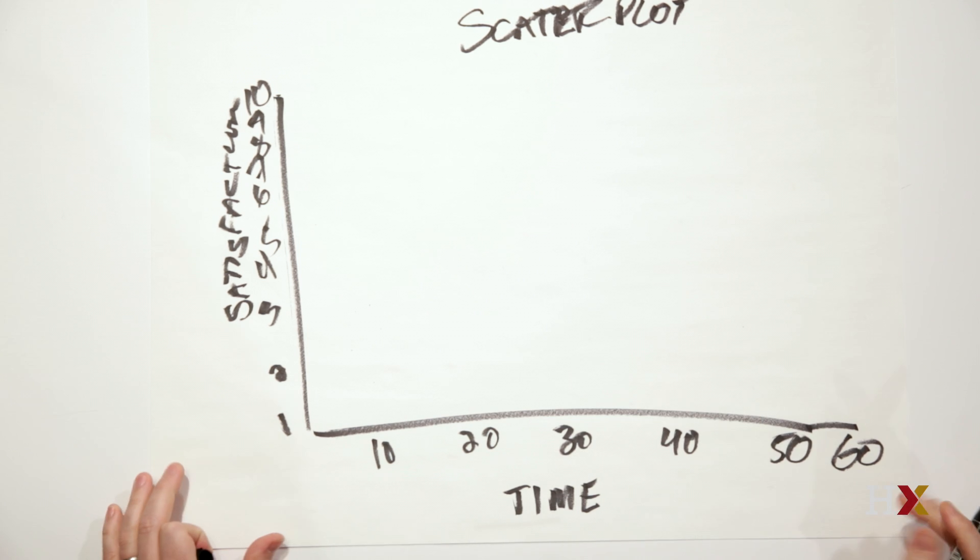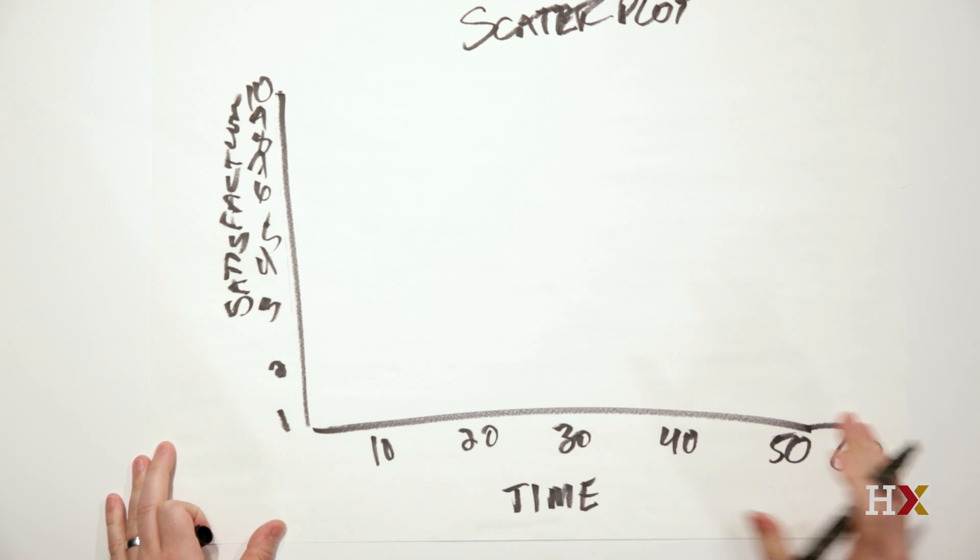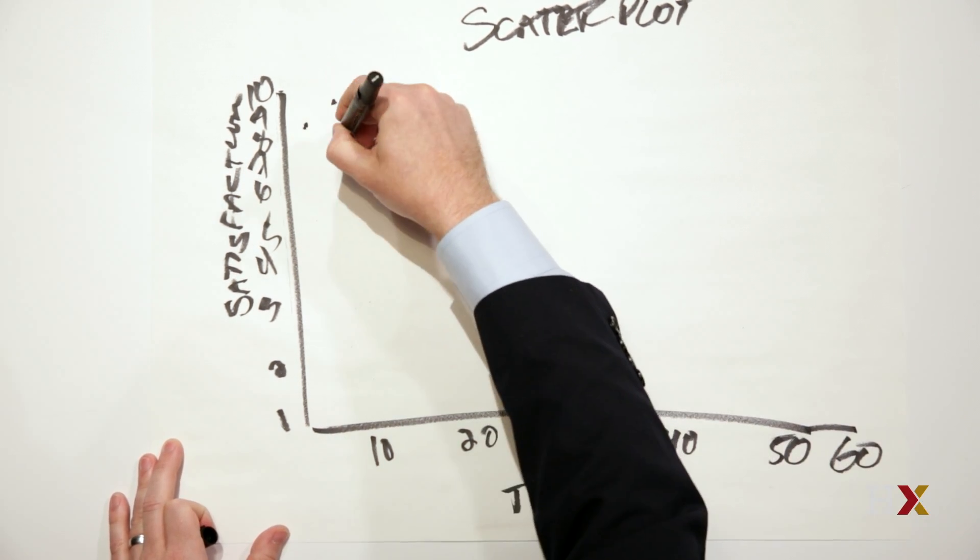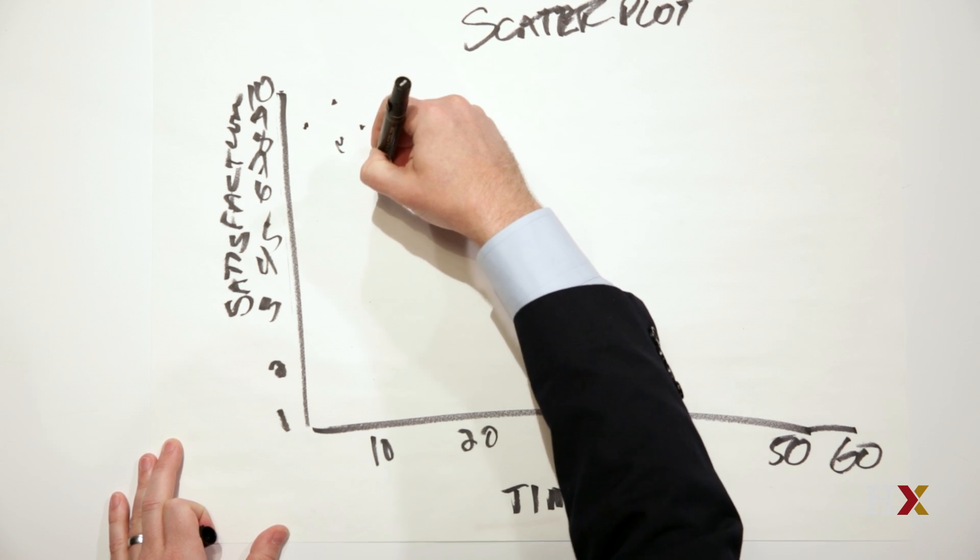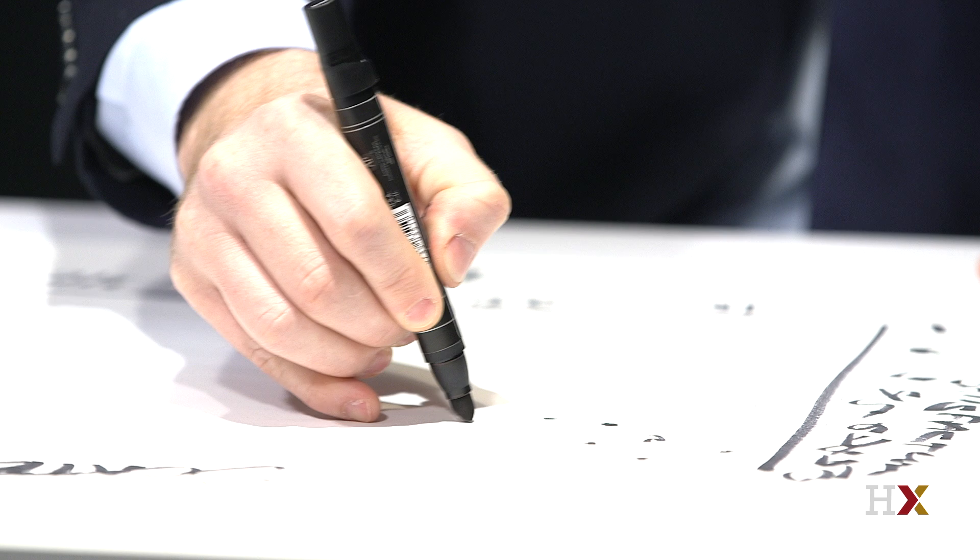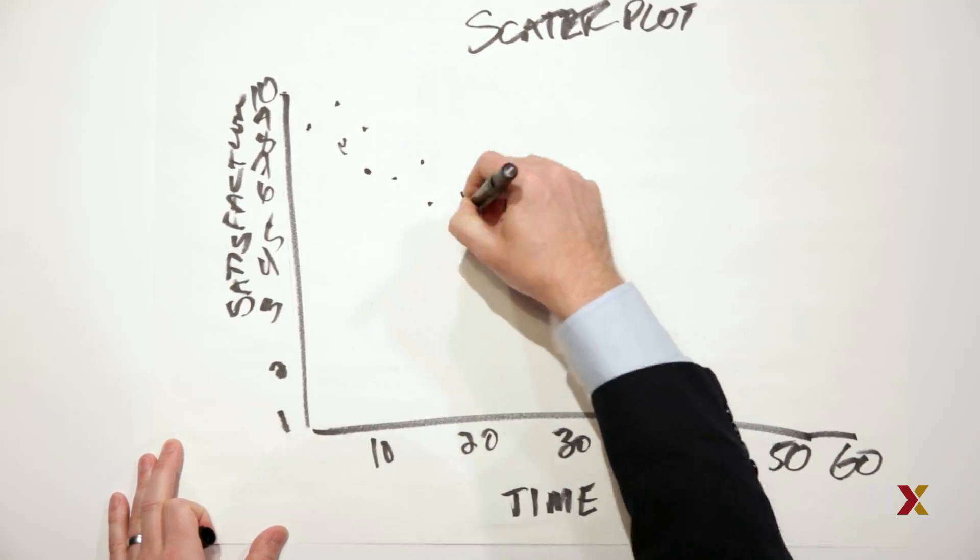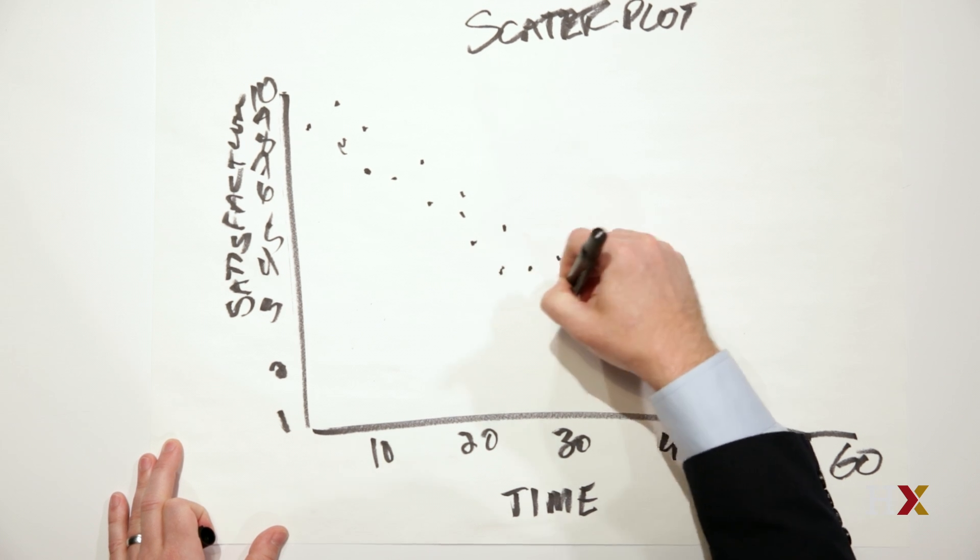So imagine as we're looking at this and we start collecting data from our patients that we start to see a series of dots, and basically as time increases, we see patient satisfaction decrease, and it creates kind of a picture like this.